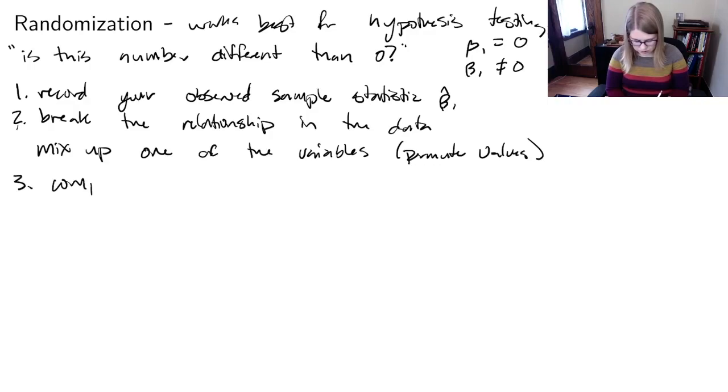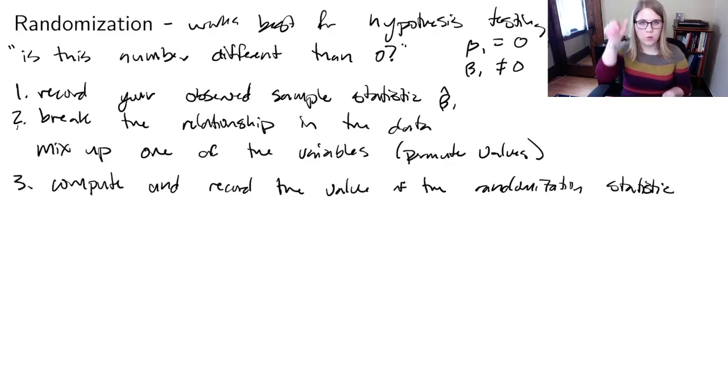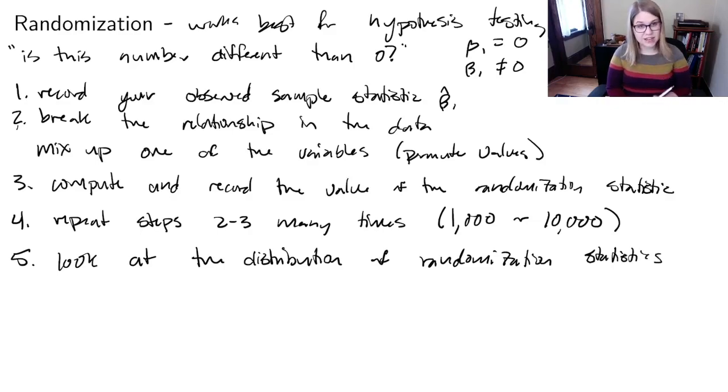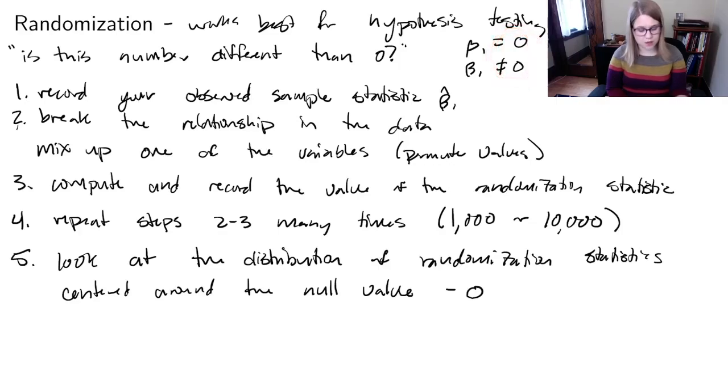Then you're going to compute and record the value of the randomization statistic. In this case that means the slope with the y variable left the way it was and the mixed up value of x. It's probably going to be around zero because there's no relationship. Then step 4 is you repeat steps 2 to 3 many times, where many means a thousand or ten thousand or a million times—do it a lot of times. Then you're going to look at the distribution of randomization statistics. It's going to be centered around the null value, and in this case that's zero because that's the number that we see appearing in our hypotheses.